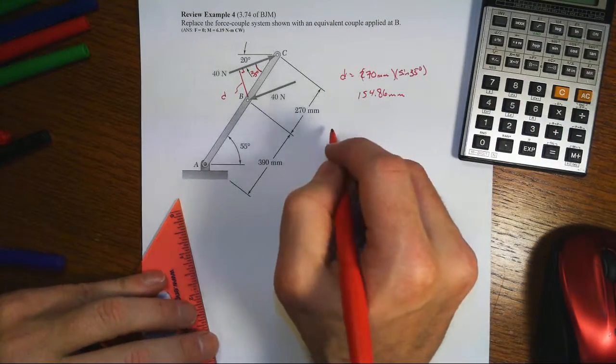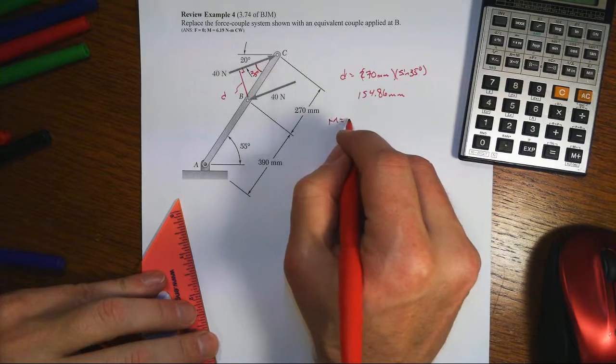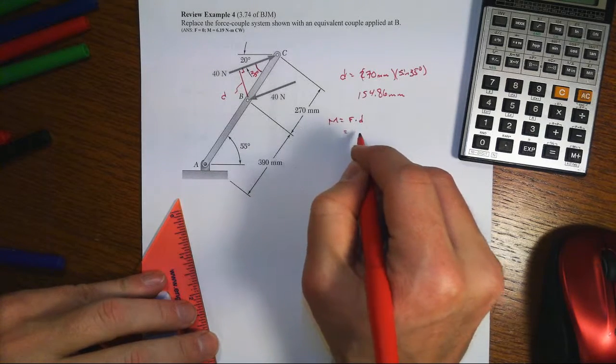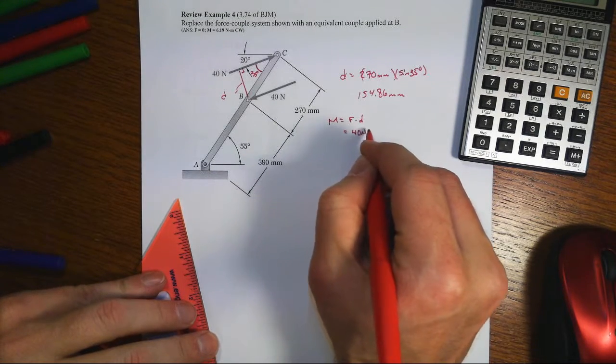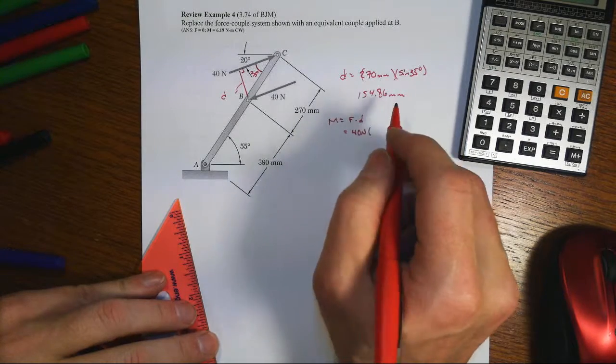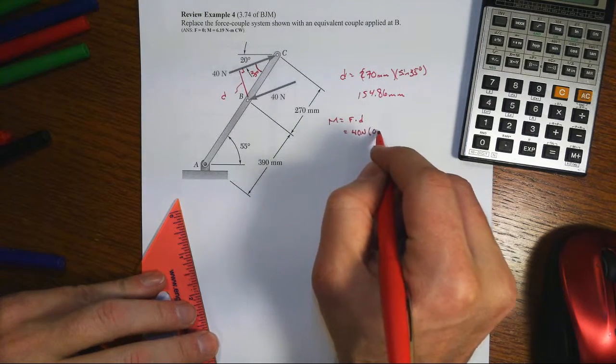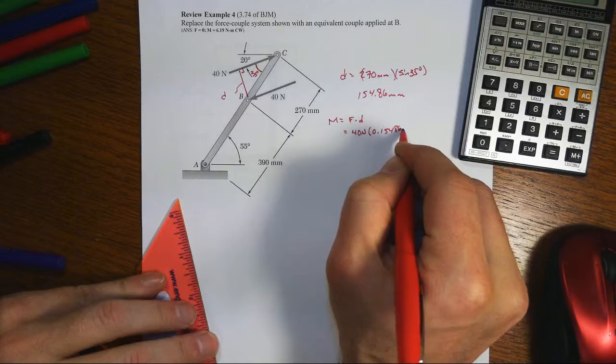And so then the moment that we're looking for is just equal to the force magnitude times the distance. The force magnitude is 40 newtons times a distance that's now 0.15486 meters.